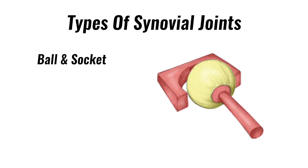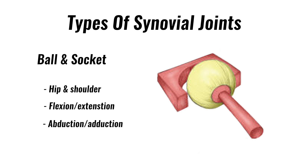Ball and socket joints are found at the hip and shoulder. They allow flexion, extension, abduction, adduction, and rotation. When all these are combined, this is known as circumduction.